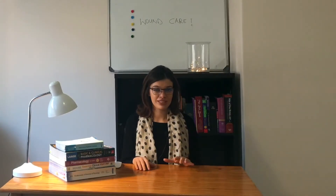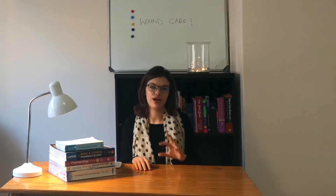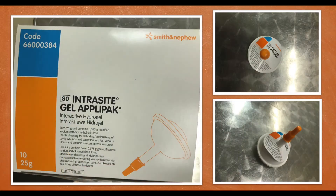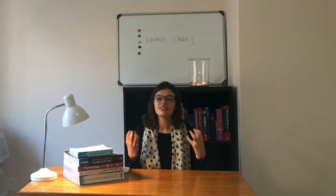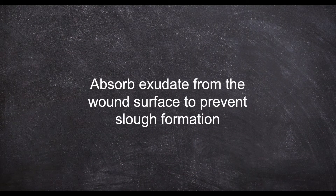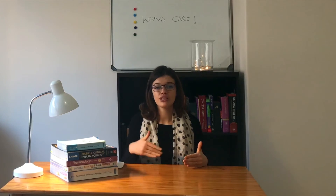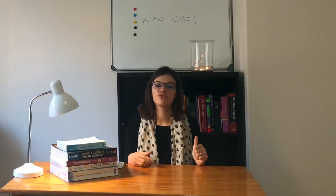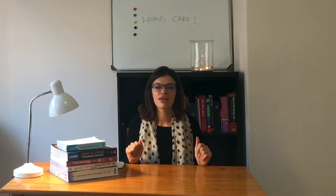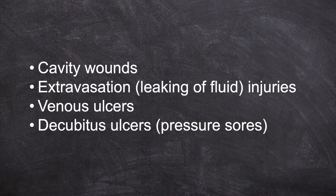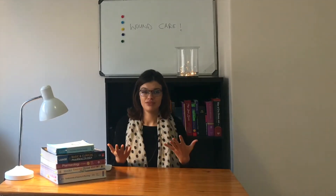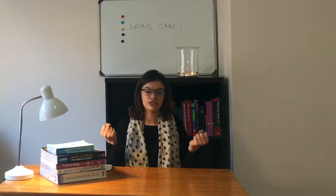Having a quick look at the terminology will make it easier to understand the products we are going to discuss now. Starting with Intracite — it falls under the class of a hydrogel and contains sodium carboxymethyl cellulose. It absorbs the exudate from the wound surface to prevent slough formation, and also causes rehydration, which produces more rapid debridement of necrotic wounds and removal of slough without damaging fragile granulation tissue. Indications include cavity wounds, extravasation injuries, venous ulcers, and pressure sores — any wound with depth and large exudate.